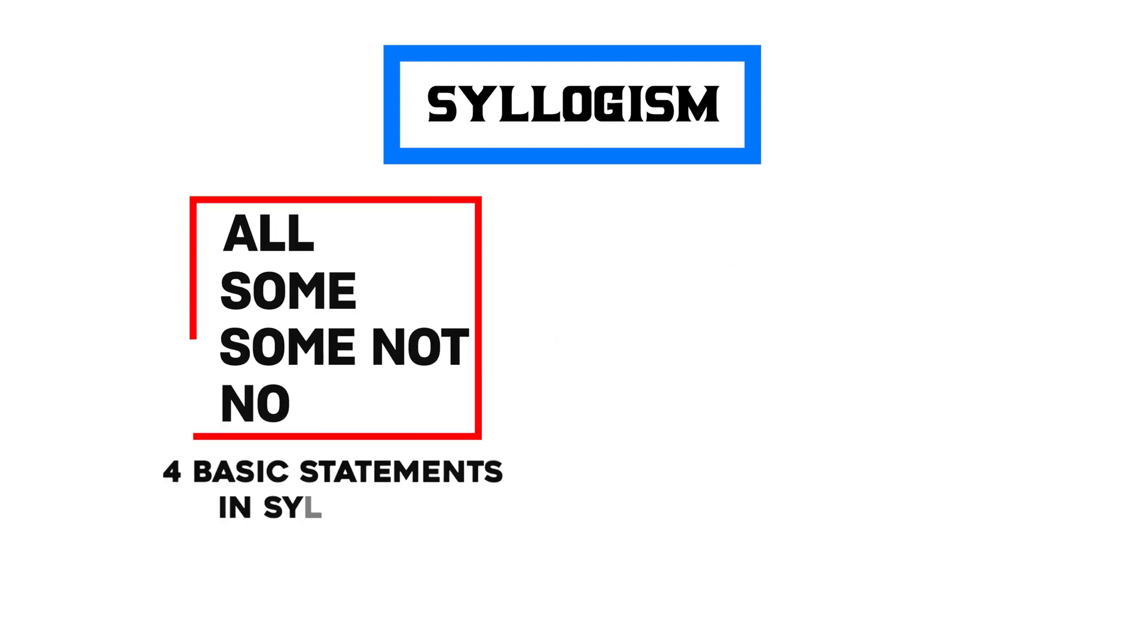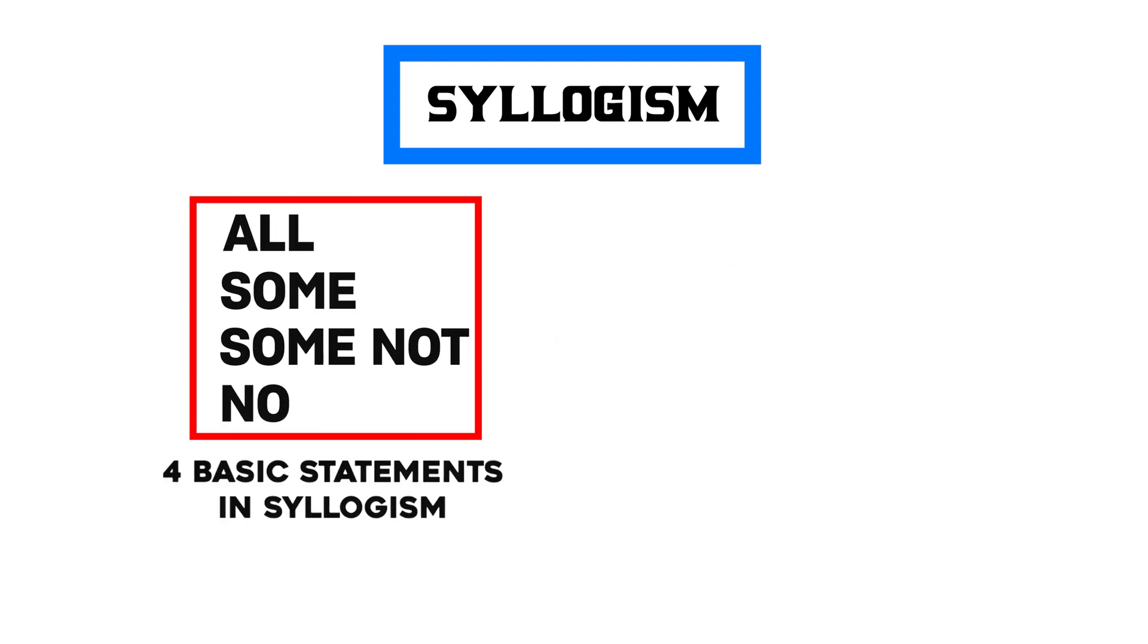These are the four basic statements in Syllogisms and all the Syllogisms you can solve by using the Venn diagram.